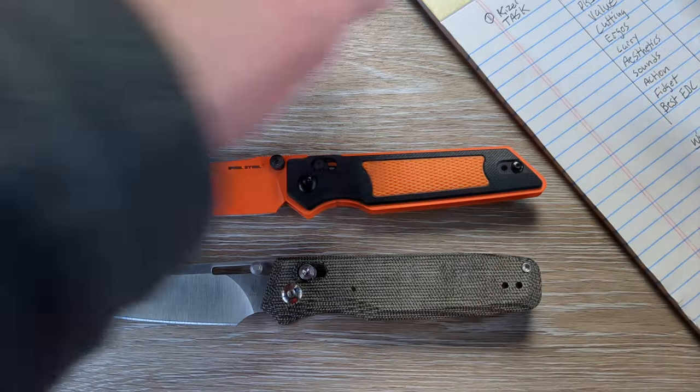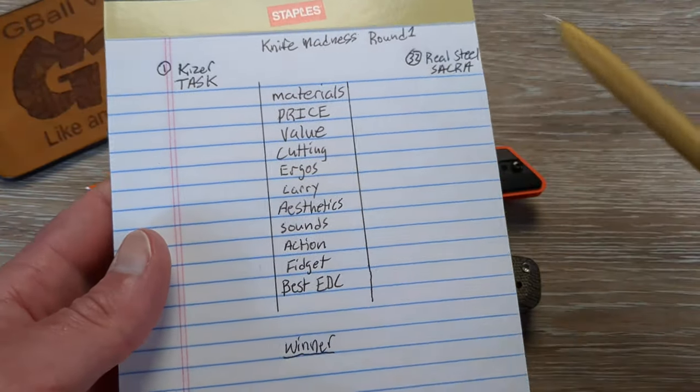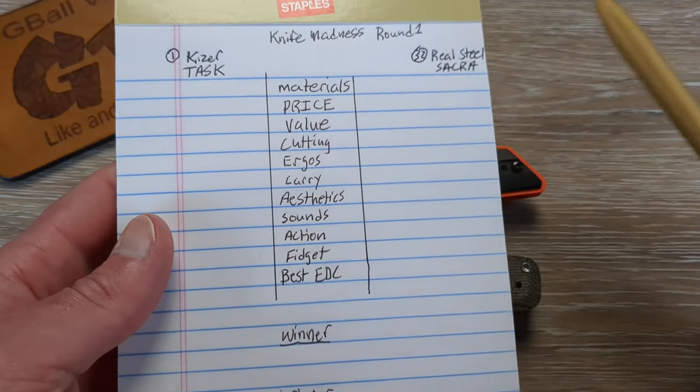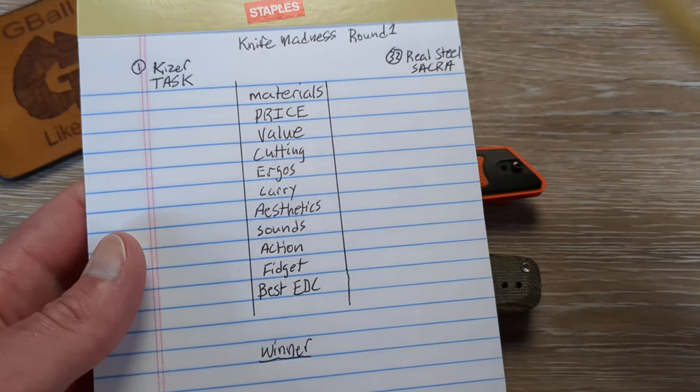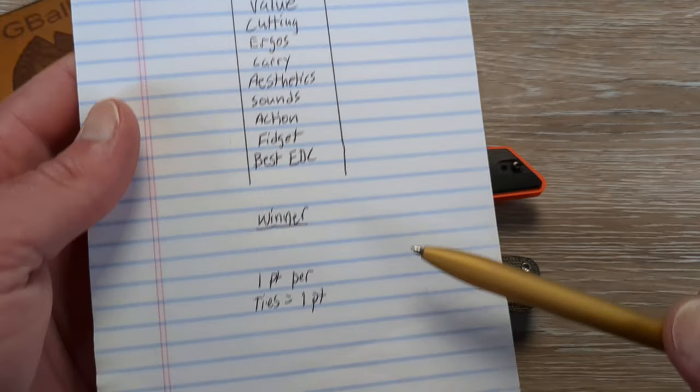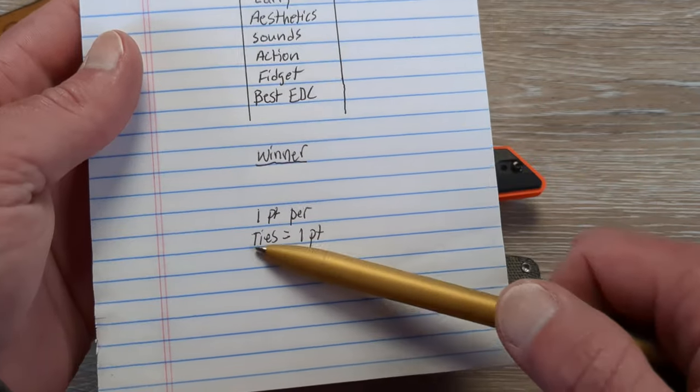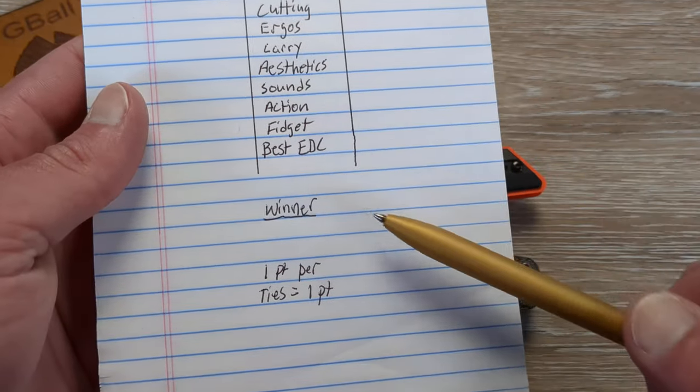All the credit for this idea goes to Mikey Reese. So we have our first round matchup guys. We're going to be talking about the Kaiser Task going up against the Real Steel Sacro. We have 11 categories, 1 point per subject and then ties will equal 1 point.